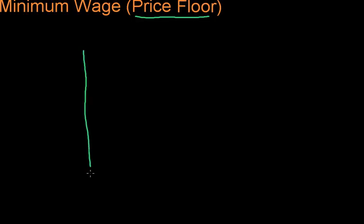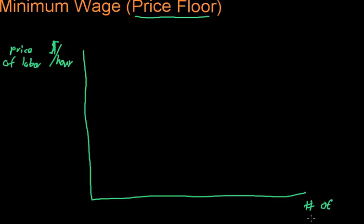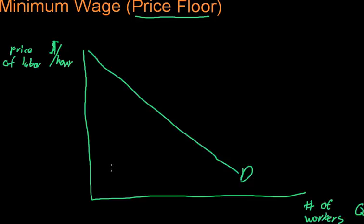I'm going to start with a plain vanilla supply and demand diagram. On the y-axis we're going to put dollars per hour, which will be the wage rate, or the price of labor. On the x-axis we're going to have the number of workers hired — we could also call that Q. Then we'll have a downward sloping demand line and an upward sloping supply line.